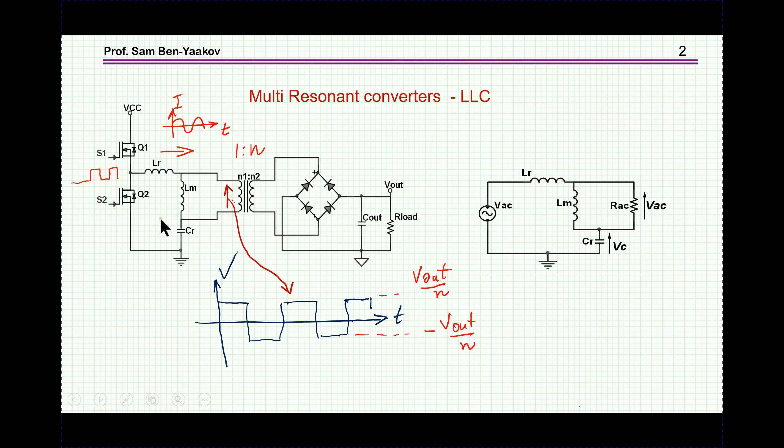Shown here is an LLC converter in a half-bridge configuration. We have a square wave generated by these two transistors. This is the resonant network, which is composed of two inductors and a resonant capacitor. We have here a transformer, bridge rectifier shown here, a filter, and then this is representing the load.